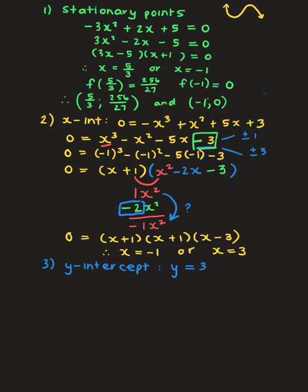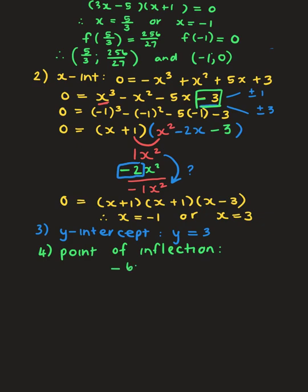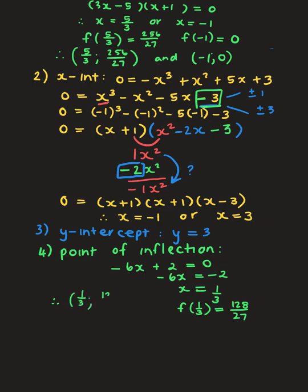For the point of inflection, we let the second derivative equal zero: -6x + 2 = 0, so x = 1/3. Substituting back into the original equation gives y = 128/27. Therefore the point of inflection is (1/3, 128/27). With fractions like these, remember your sketch does not have to be drawn to scale — focus on the shape.